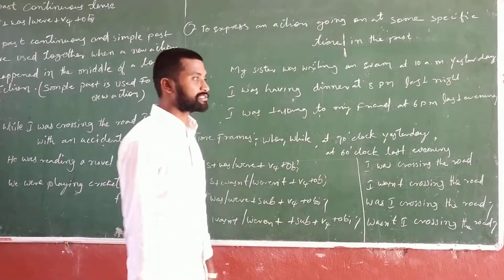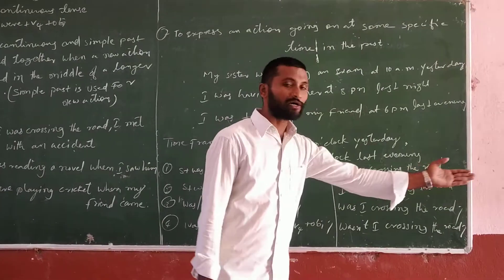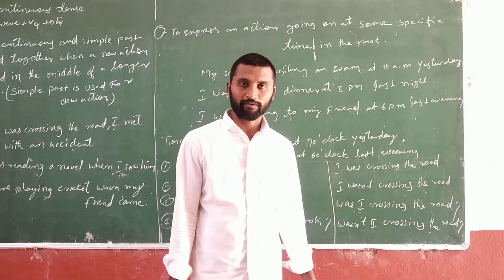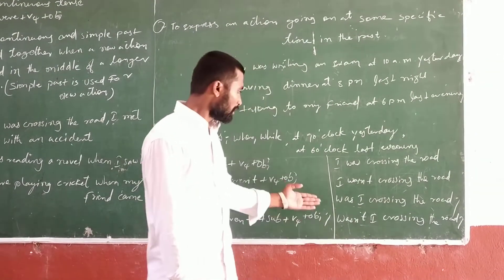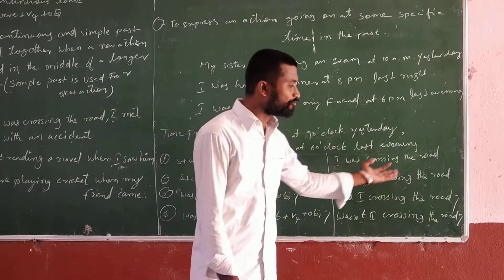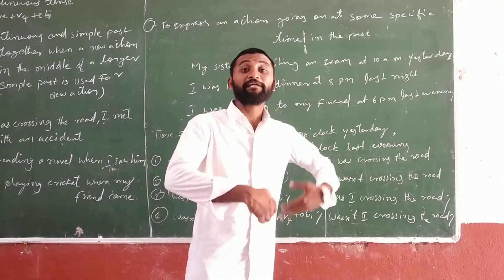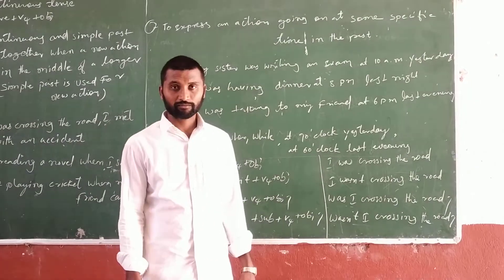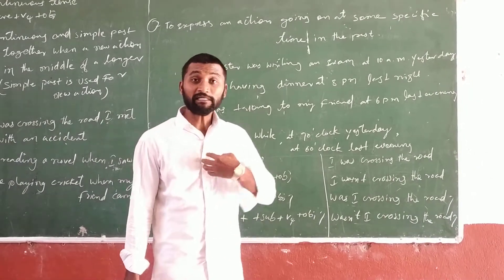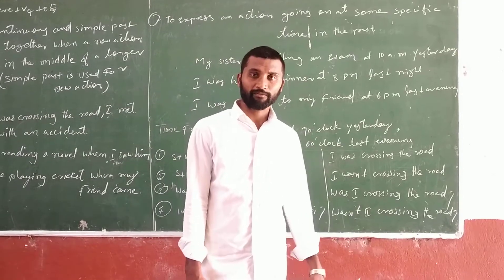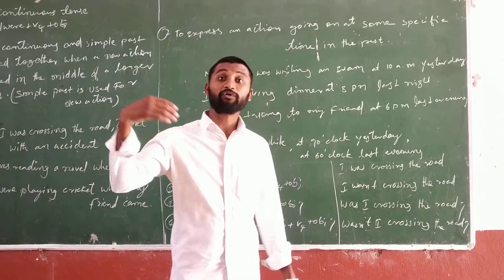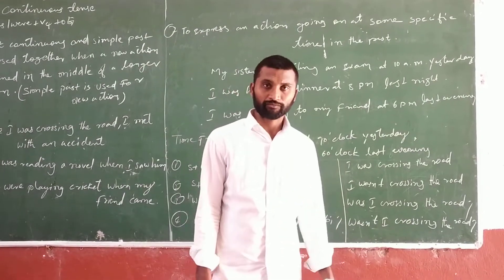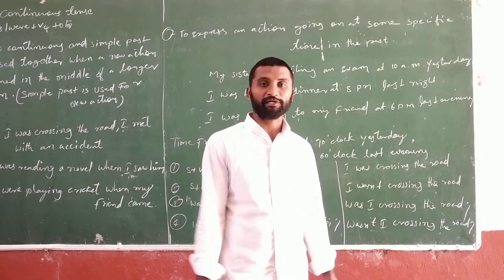Positive examples: 'I was crossing the road.' 'She was reading the newspaper.' Negative examples: 'I wasn't crossing the road.' 'I wasn't reading the newspaper.' 'I wasn't talking to my friends.' 'I wasn't eating the food.' All these are negative sentences.